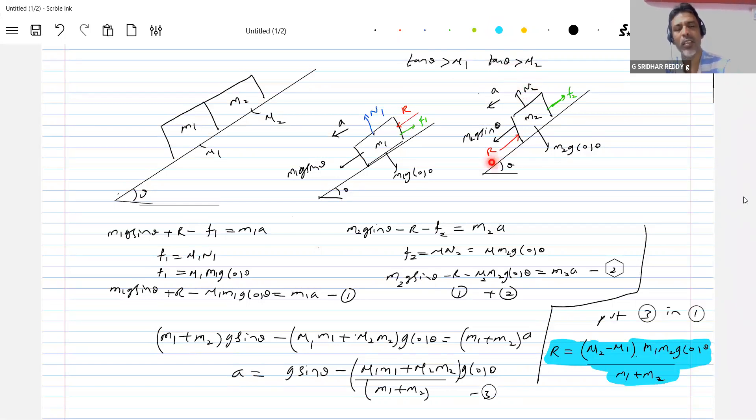If tan theta greater than mu1 greater than mu2, so both will slide. Will they be in contact or not? When both are sliding, will they be in contact or not? Who will determine? Again, mu2 should be greater than mu1. Getting this? I am trying to stress some idea here.